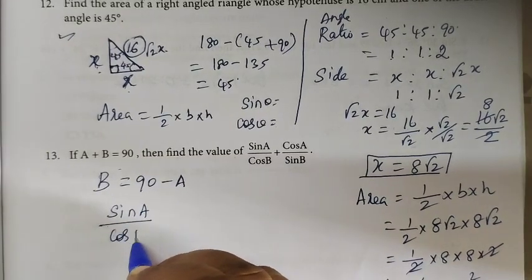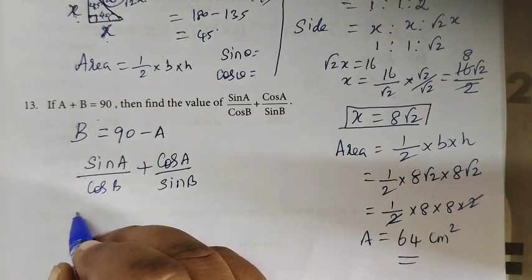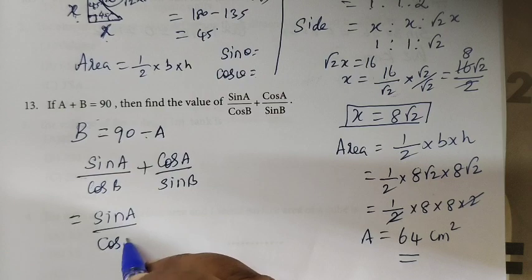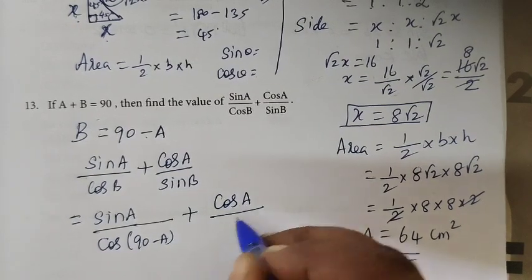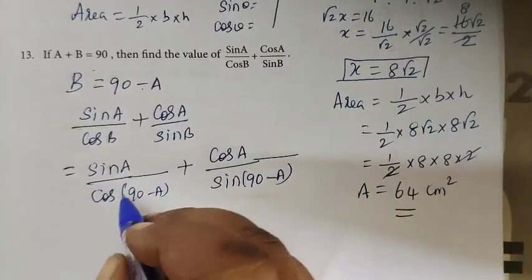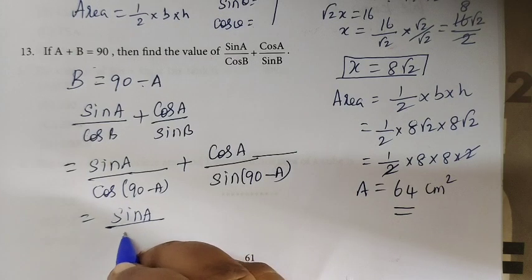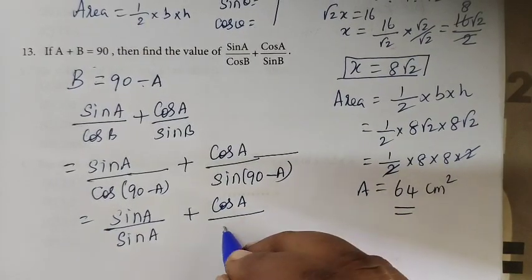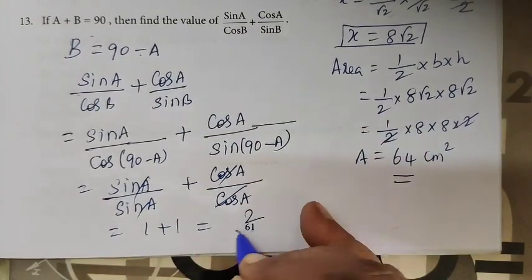Sin a by cos b plus cos a by sin b. Instead of b, write 90 minus a. So sin a times cos(90 minus a) plus cos a times sin(90 minus a). Since cos(90 minus a) equals sin a and sin(90 minus a) equals cos a, we get sin²a plus cos²a, which equals 1 plus 1, so the answer is 2.